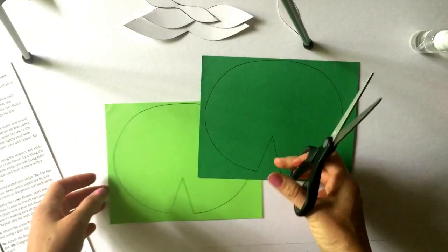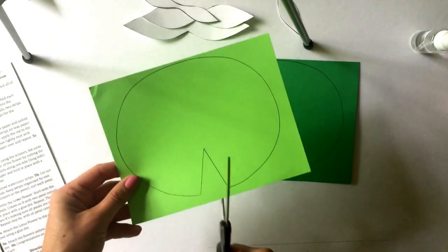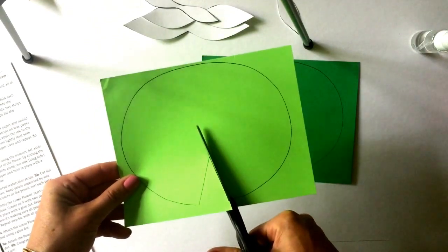Step 4A. Cut out a lily pad using the scissors. Once cut, set the lily pad aside.